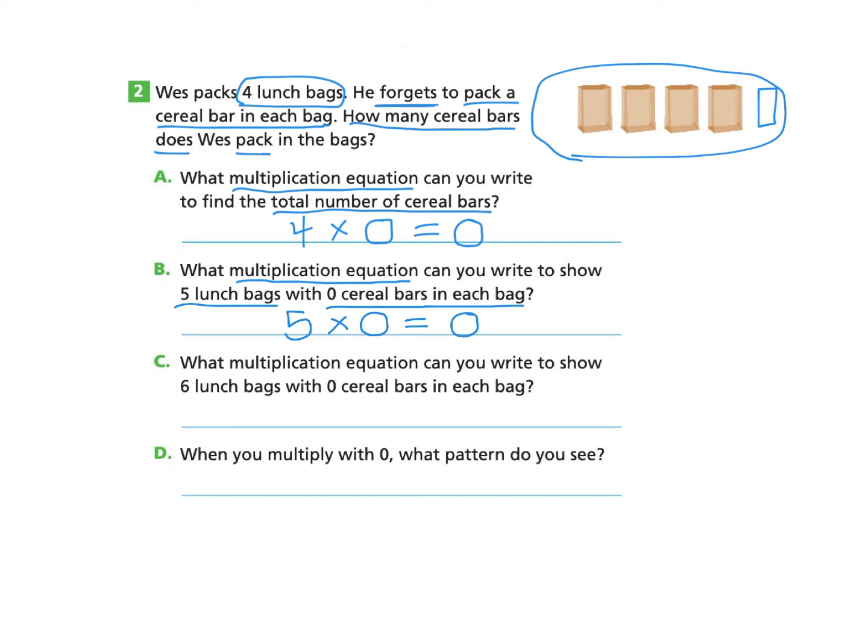Part C, what multiplication equation can you write to show 6 lunch bags with 0 cereal bars in each bag? Again, pause if you'd like. There are 6 lunch bags and inside each lunch bag, there were 0 cereal bars. So that's like we're adding another bag up here and there aren't any other cereal bars being added. So our total number of cereal bars would be 0.